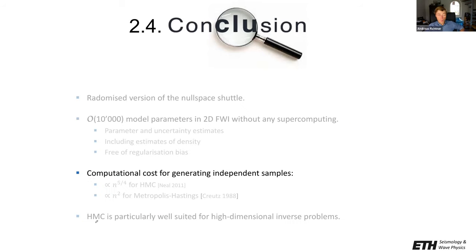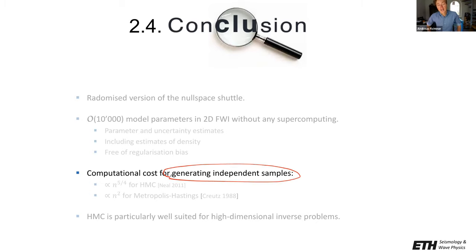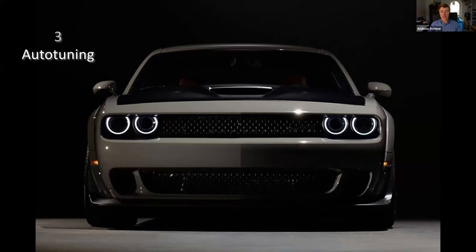What you will see in the next chapter after the break is more in-depth coverage about generating independent samples, how we can even accelerate this, and how we can optimize the generation of those independent samples. This will be about auto-tuning Hamiltonian Monte Carlo.